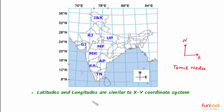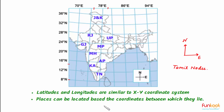In this problem we have learned that latitudes and longitudes are similar to the XY coordinate system, and places can be located based on the coordinates between which they lie. Bye-bye.